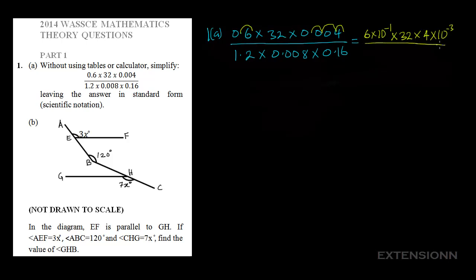For 1.2, to get 12 out of this, we move the decimal point forward once, giving us 12 times 10 to the power minus 1. For 0.008, we move it 3 times, giving us 8 times 10 to the power minus 3. For 0.16, we move it 2 times, giving us 16 times 10 to the power minus 2.